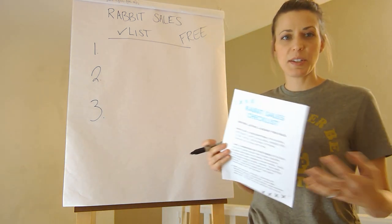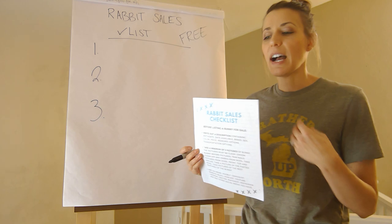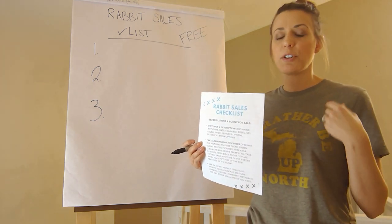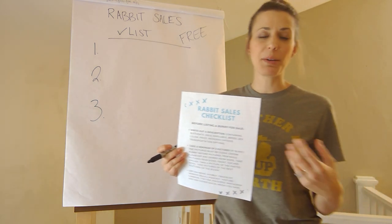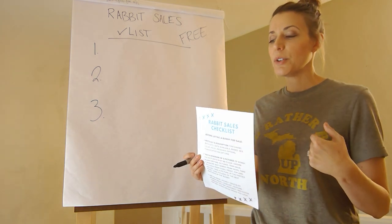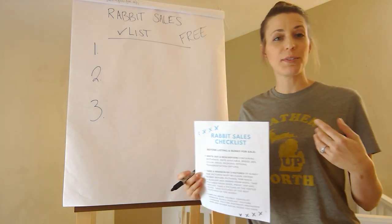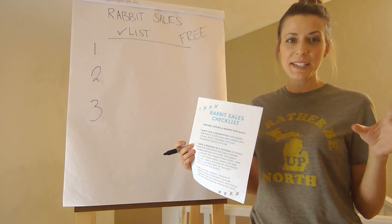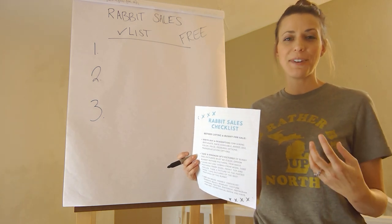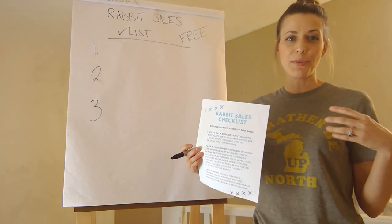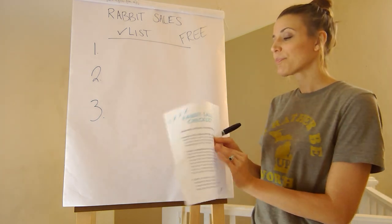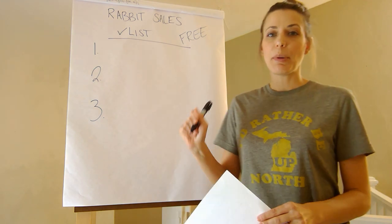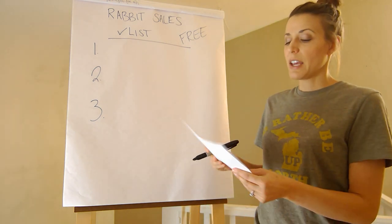This checklist came into being because selling or rehoming a rabbit is something that can happen. If you're a breeder, it's something you want to get good at. If you have a rabbit you can no longer take care of, you want to find a good home for it. Or if you have an oopsie litter of rabbits, you want to be able to find a good home for them. The checklist has three main parts.